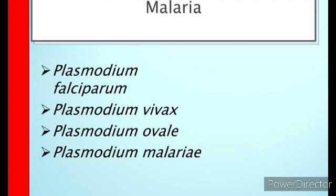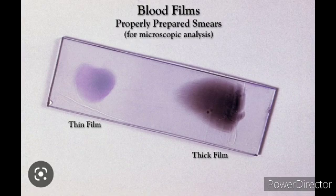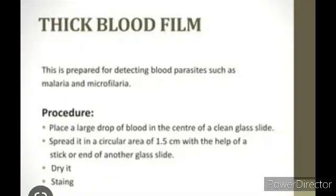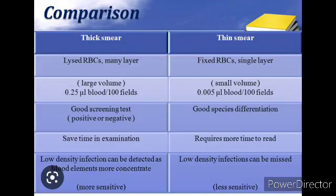Blood is made into two smears — thick smear and thin smear — which can be prepared on the same slide or different slides. A thick smear is prepared by taking two to three small drops of blood and spreading over an area of two centimeters; thickness should be such that we can read newsprint through it. It is air dried and de-hemoglobinized by dipping in distilled water for 10 minutes. Advantages of thick smear: parasites can be detected as low as 5–10 per microliter of blood, quantitation of parasitemia is possible, and malarial pigment can be demonstrated.